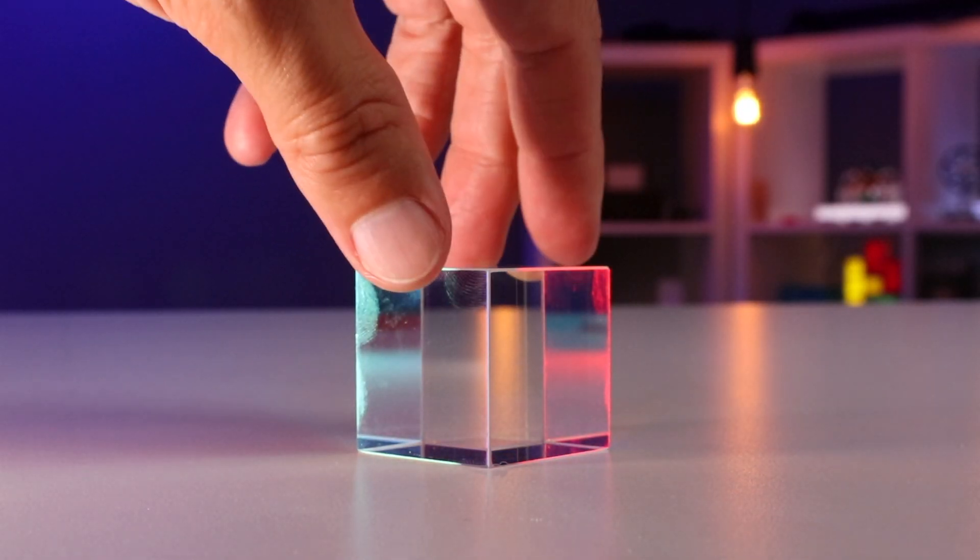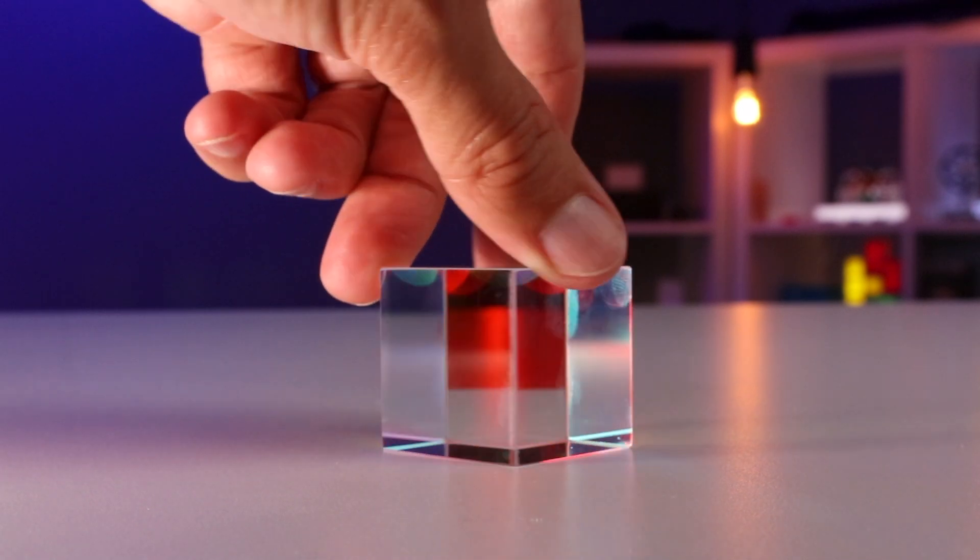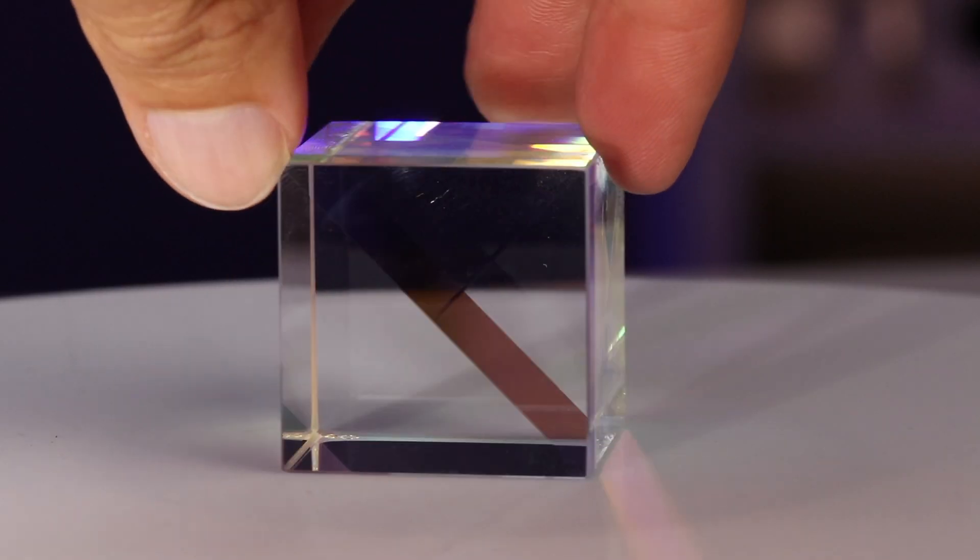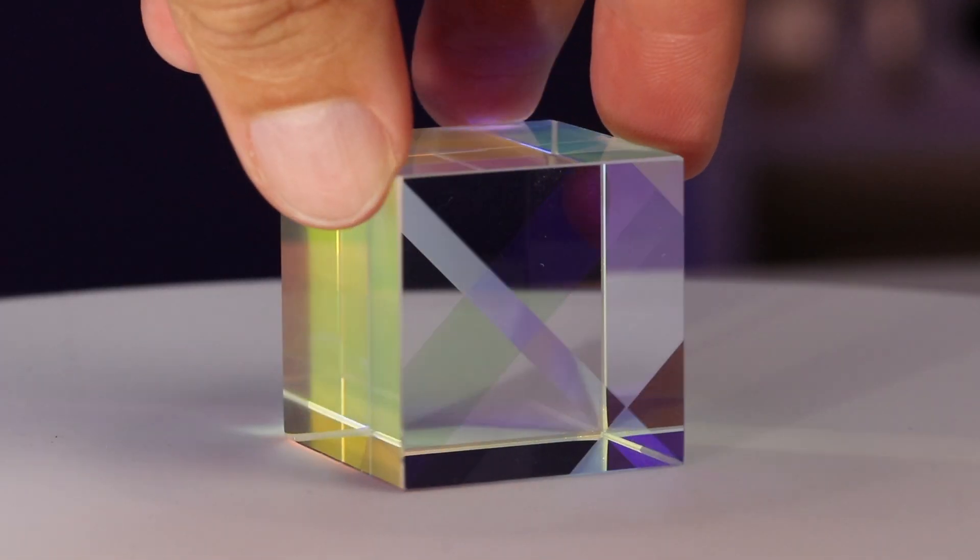You'll see some different colors getting reflected at you. And if you look at the top or bottom, you'll notice a faint X in it. And that X is showing you where the filter lines are that make up this prism.